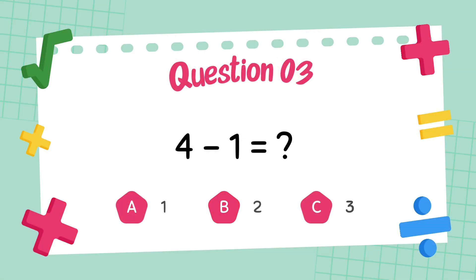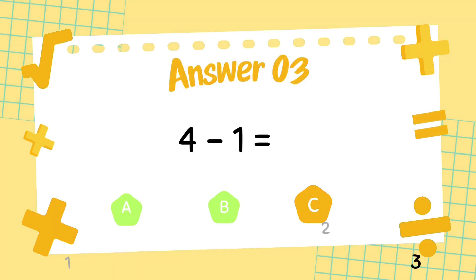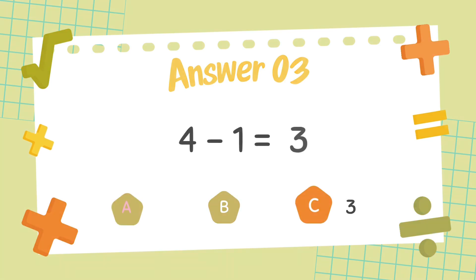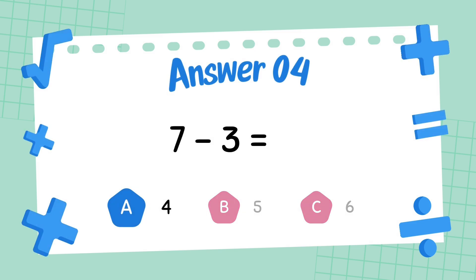What is 4 minus 1? The answer is 3. What is 7 minus 3? The answer is 4.